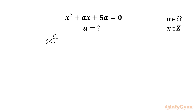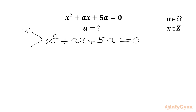x squared plus ax plus 5a equal to 0. Let's assume the roots of this quadratic equation are alpha and beta. Using Vieta's theorem we can write the sum of roots equation and we can write the product of roots equation.